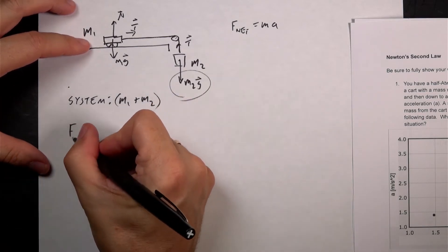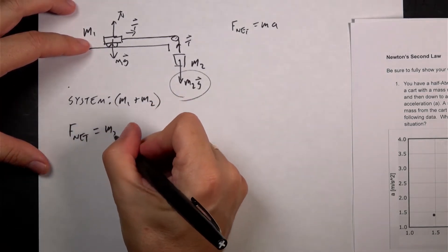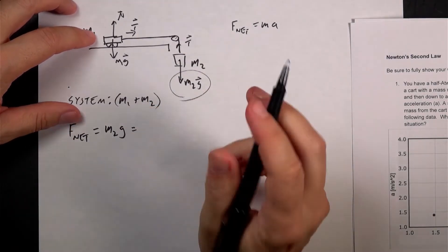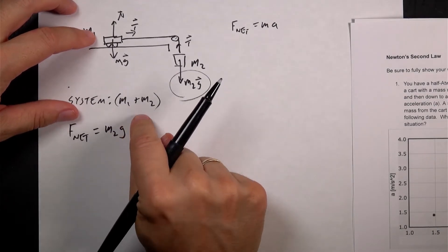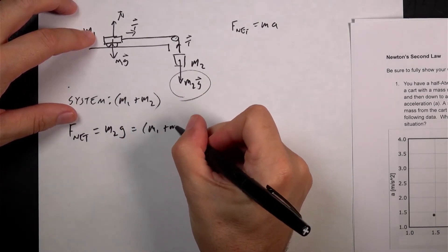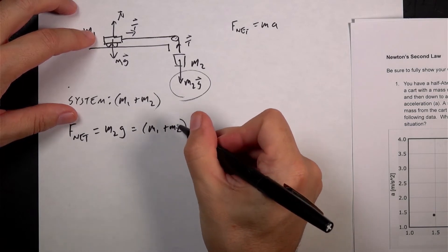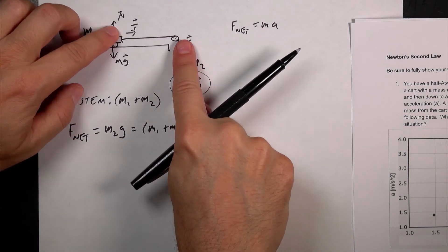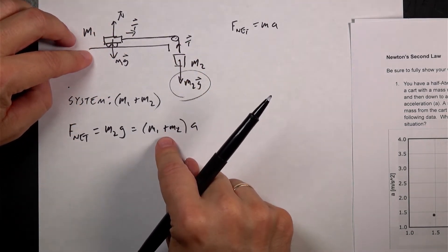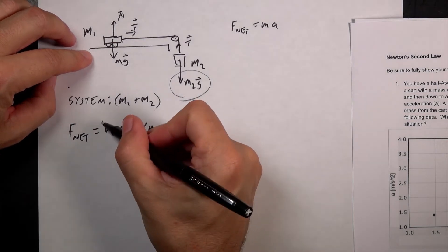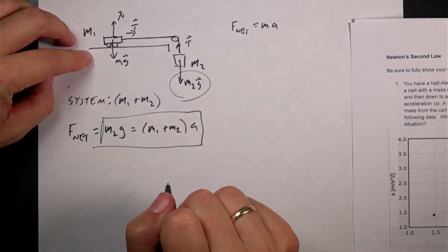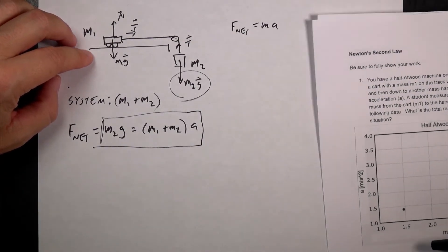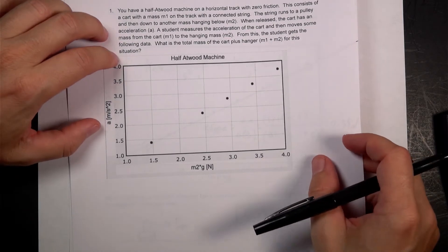So that means if I have the system of M1 plus M2, the only force on it is that. So my net force, F net, is going to be M2G. Whatever mass is hanging down there. And that's going to be equal to mass times acceleration. But I need my total mass, M1 plus M2 times, they're both accelerating. So that's the mass that has a gravitational force and makes the net force. But both of these masses accelerate. So I have to say M1 plus M2 for A. So I get this equation. That's my half Atwood machine equation.